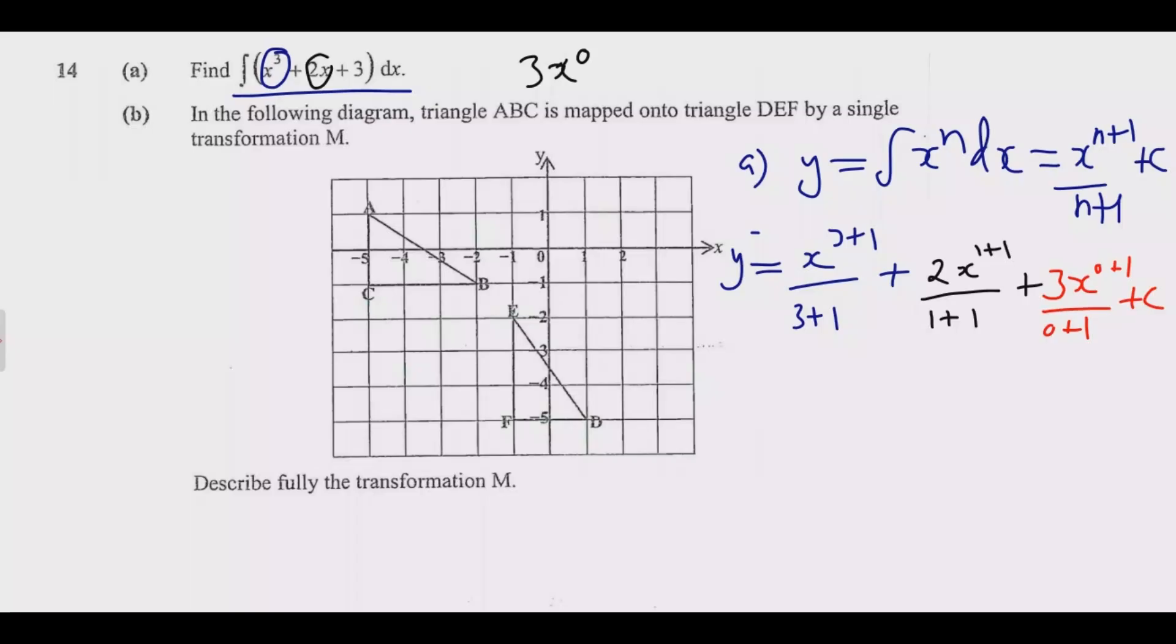Because this is an indefinite integral, you always add a constant. Then at this point it's just a matter of simplifying this. We have 3 plus 1 is 4, so x to the power 4 over 4, then plus...